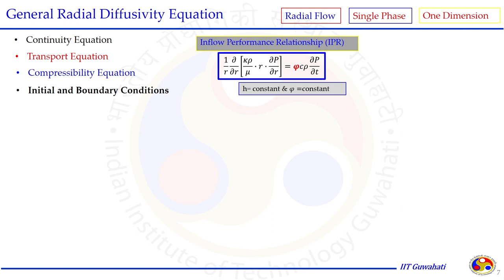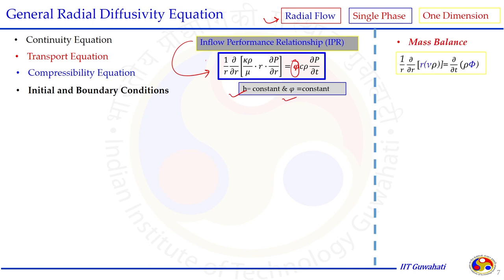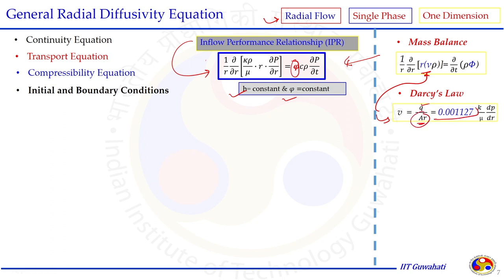To develop the radial diffusivity equation, we are talking about radial flow where the fluid flows in the r direction. The difference between the inflow performance equation and the general radial diffusivity equation is that in the IPR equation we consider both h and φ constant, whereas for the more general radial diffusivity equation we do not consider φ constant. Let us consider what happens when we start again with the same mass balance equation using Darcy law — now Darcy law is substituted in terms of velocity.